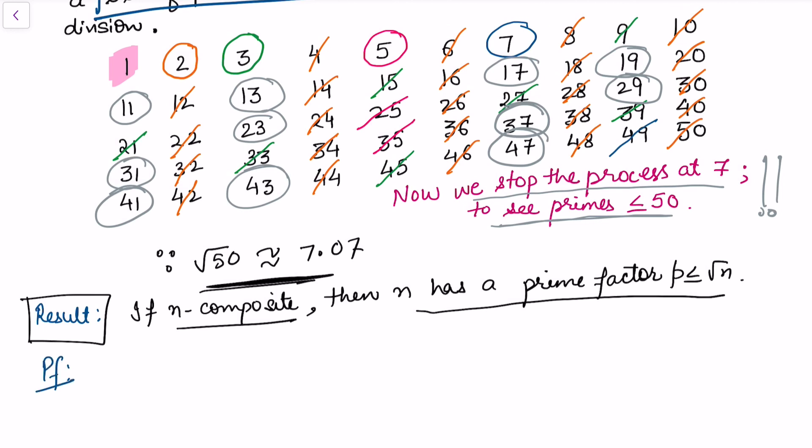To see the proof of this result, let us see if n is a composite number. We know that n is a composite number, we can write this as a multiple of two integers a and b, where 1 is strictly less than a less than or equal to b strictly less than n. So we are not taking the trivial condition, say if a is equal to n then obviously b has to be equal to 1.